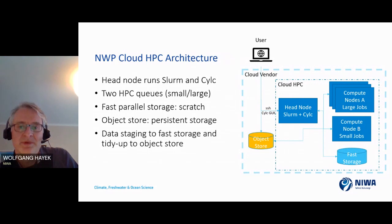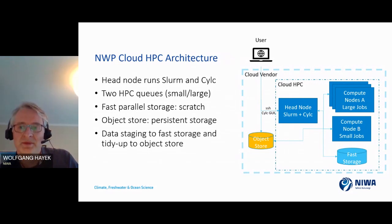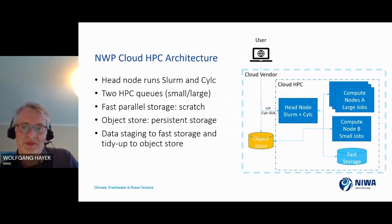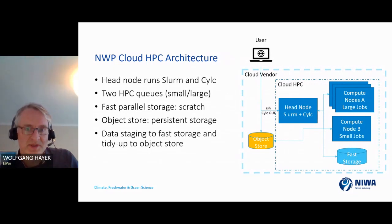The architecture we used is quite similar in principle to what we currently have. We configured a head node running Slurm and Cylc — a very important tool for orchestrating weather forecasts. We set up two partitions: one for big compute like the Unified Model and one for smaller pre- and post-processing jobs. All nodes can talk to centralized fast storage, similar to what we have on our HPC with a global file system.